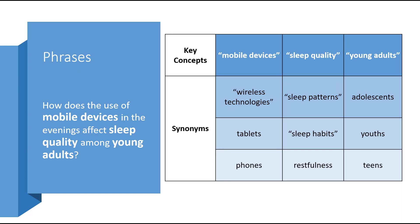Phrases are two or more words held together by quotation marks. This is one more way to increase the precision and relevance of retrieved information, because databases will typically insert AND between the words unless you use quotation marks. For instance, a keyword search for mobile technologies will return a mix of entries with the word mobile and others with technologies.